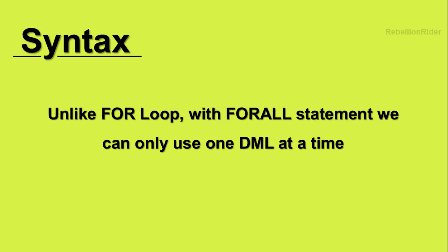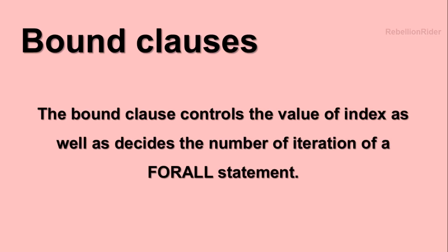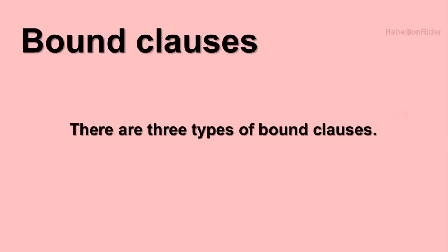Now let's learn about the bound clauses which we can use with the FORALL statement for bulk processing in Oracle Database. The bound clause controls the value of the index as well as decides the number of iterations of a FORALL statement. There are three types of bound clauses.